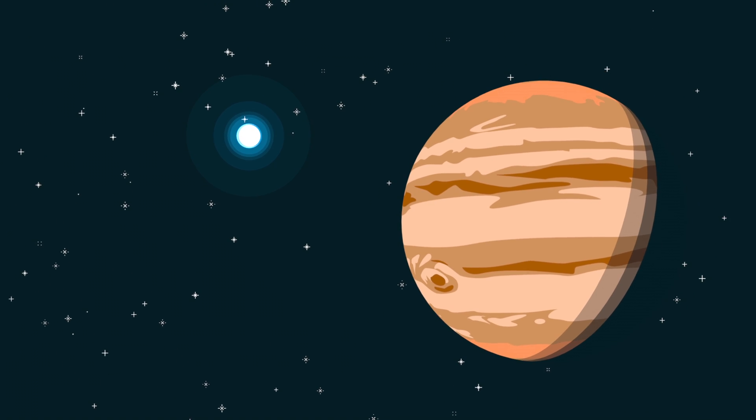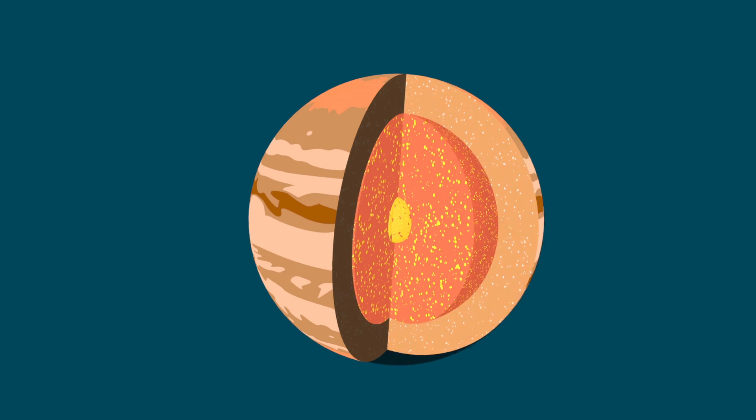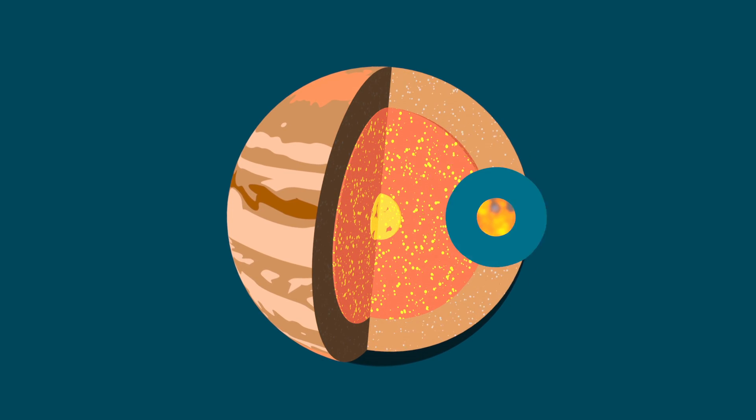If you were to look inside the Sun or a gas giant like Jupiter, you would find a world under extreme pressures and temperatures. Looking even more closely, you would find a highly unusual state of matter that isn't a solid, liquid, gas, or plasma, but may still have the properties of all of them.